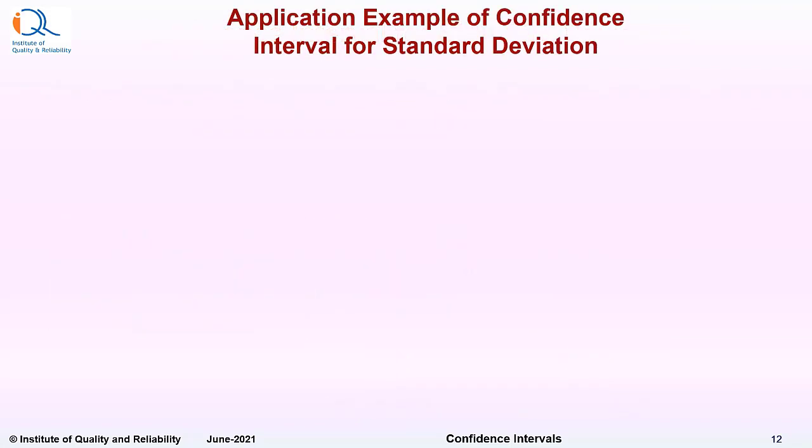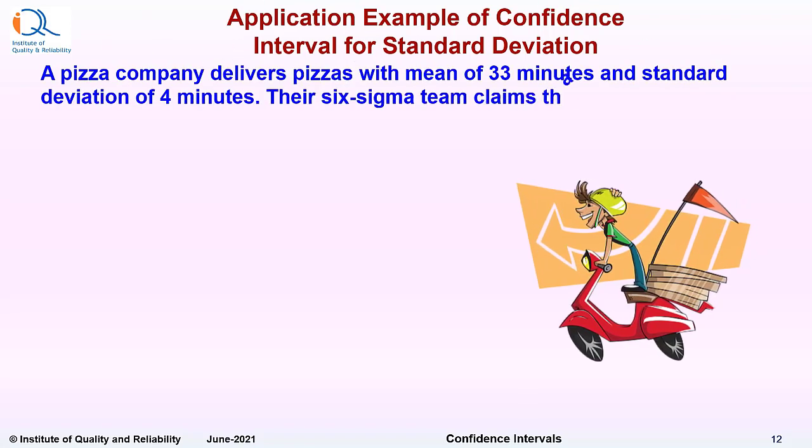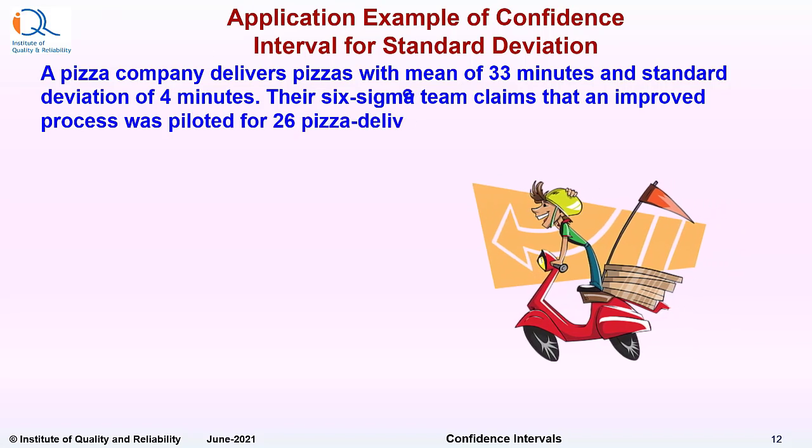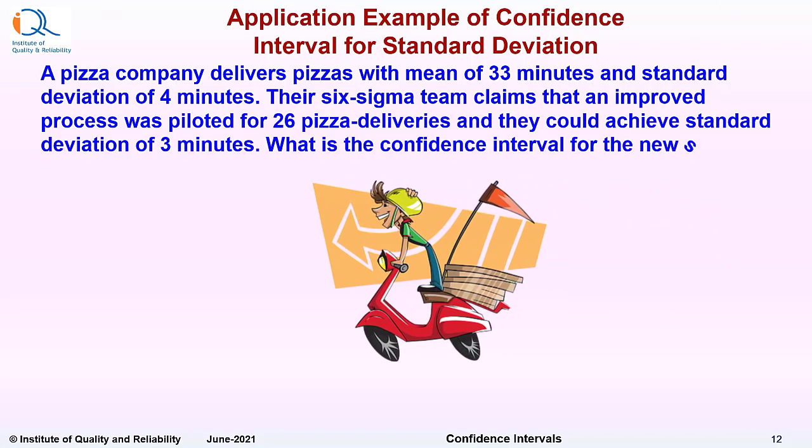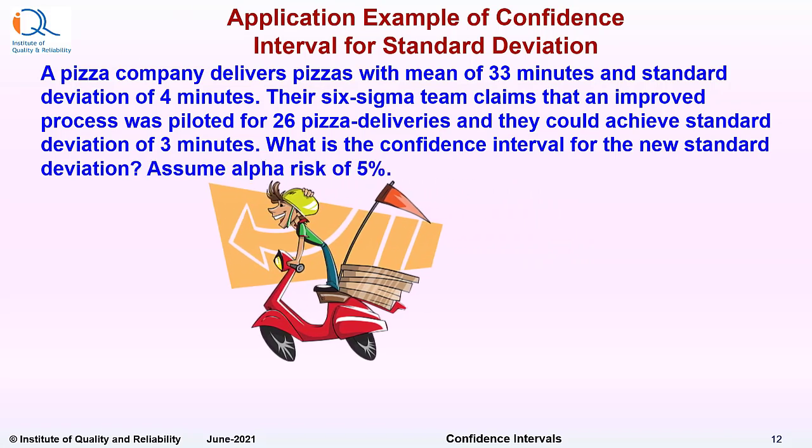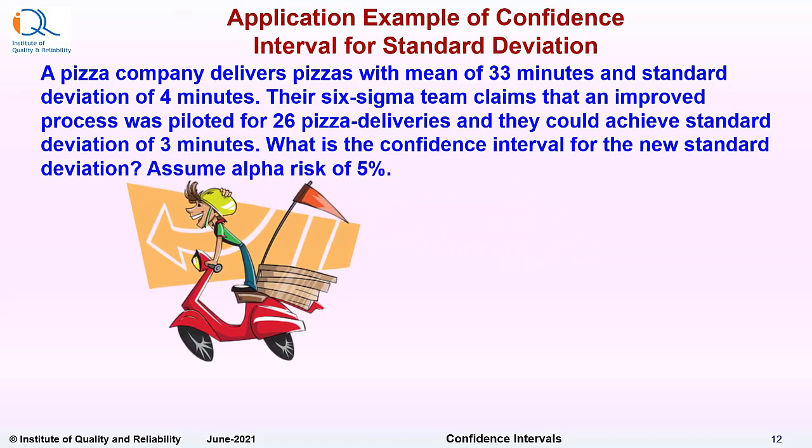Let us see an application example of confidence interval for standard deviation. A pizza company delivers pizzas with mean of 33 minutes and standard deviation of 4 minutes. Their Six Sigma team claims that an improved process was piloted for 26 pizza deliveries and they could achieve standard deviation of 3 minutes.